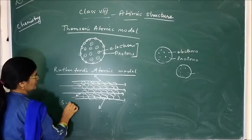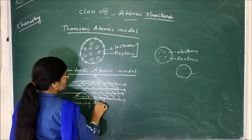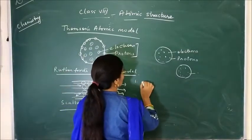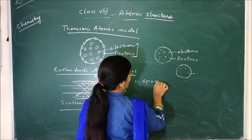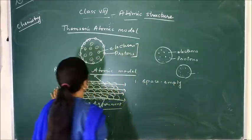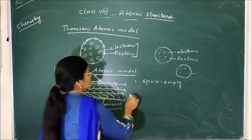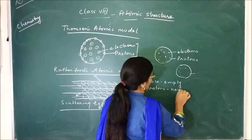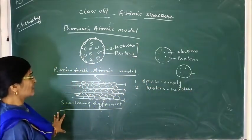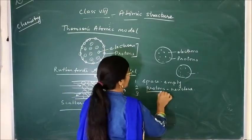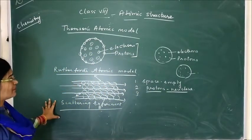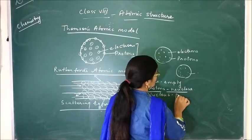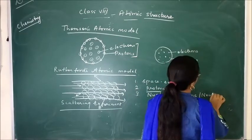From this scattering experiment, Rutherford gave his observations. He observed that most of the atom's space is empty — that is why most of the rays passed through the gold foil. Second, most of the protons are present in the nucleus. The mass of the atom is concentrated in the nucleus. He described the central part as the nucleus, in which protons and neutrons are present. Protons are positively charged.